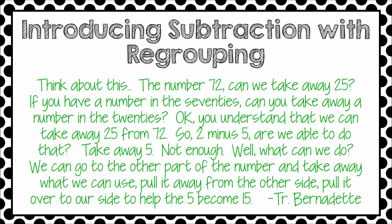Here's the third quote: 'Think about the number 72 — can we take away 25? If you have a number in the 70s, can you take away a number in the 20s? So you understand we can take away 25 from 72. So 2 minus 5 — are we able to do that? Not enough. Well, what can we do? We can go over to the other part of the number and take away what we can use. We're going to pull it away from that other part over to the ones so that 5 becomes 15.' The subtle language difference here is huge — the teacher says you, as second or third graders, are not yet able to do that, because we have not yet learned to work with negative numbers.